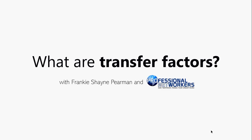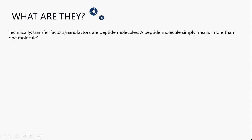What are transfer factors? Technically, transfer factors and nanofactors, which we discovered later on, are peptide molecules. A peptide molecule means more than one molecule — there are actually transfer factors as a polypeptide of about 43 different amino acids that make up this molecule.